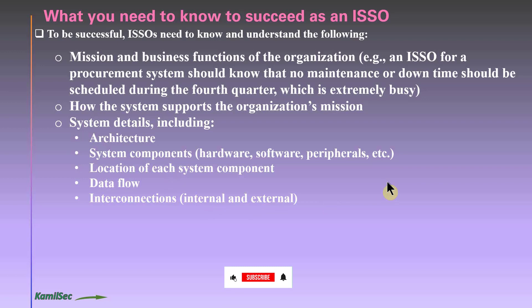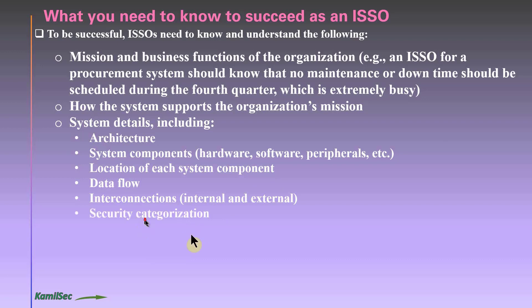You should be aware of all interconnections within your system — both internal and external. If you have an external interconnection between your system and another system in a different agency or department, make sure the Interconnection Security Agreement (ISA) is in place. If it's within the same agency, make sure you have the Memorandum of Understanding (MOU) present.